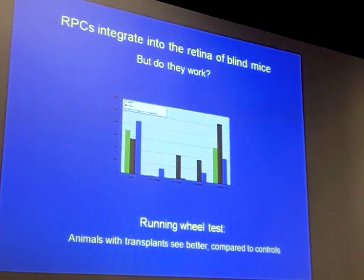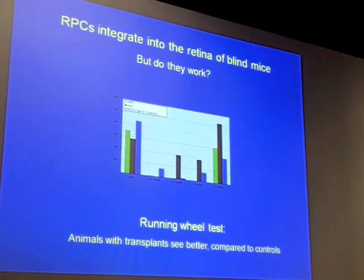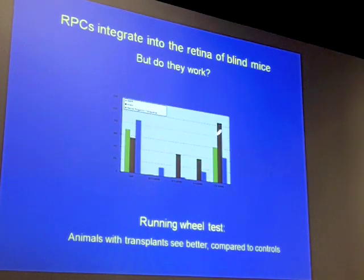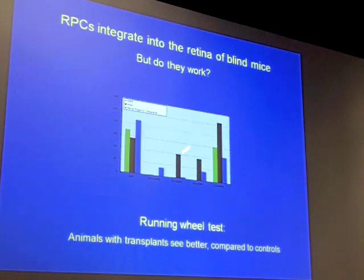We wanted to know if they functioned, so we put our transplanted mice onto a running wheel test to see if they could detect light. We showed that the transplants, shown in blue, had increased light sensitivity compared to the diseased blind mice. In this case, a higher bar is a worse effect — so this is what blind mice look like, transplant mice are better than that, and fairly normal mice are even better.